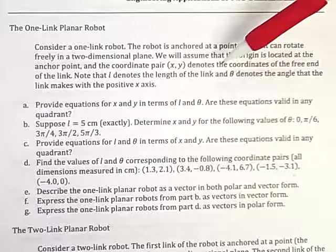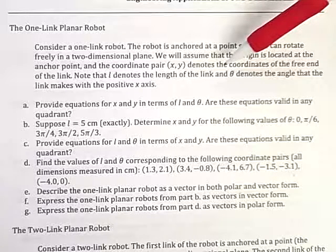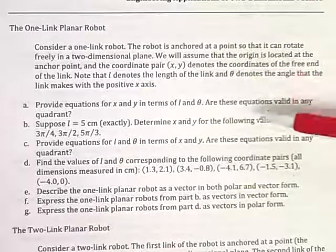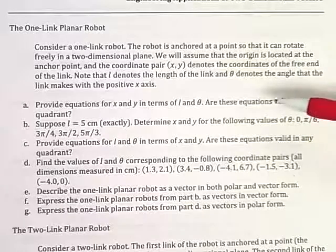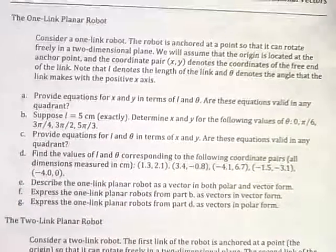Note that L denotes the length of the link and theta denotes the angle the link makes with the positive x-axis. And part A wants us to provide equations for x and y in terms of L and theta. And then asks, are these equations valid in any quadrant?